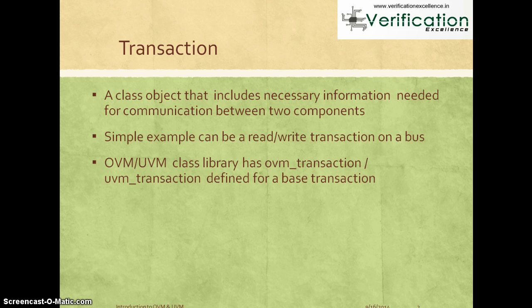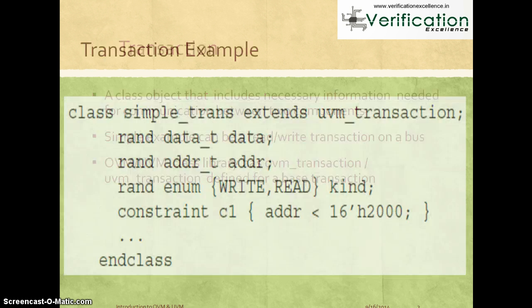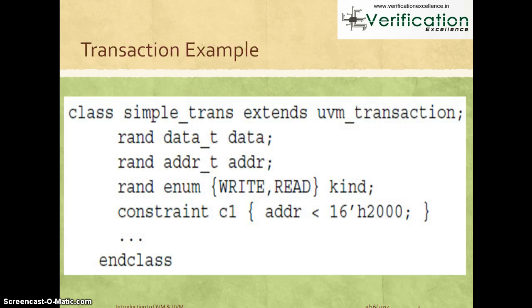Both OVM and UVM class libraries have their own base transactions defined in the base class. OVM has something called an OVM transaction class and UVM has something called a UVM transaction class. Anyone building a test bench on OVM or UVM defines their own transactions by deriving from this base class and adding more information specific to what they want to implement. Let's see an example to make this much more clear.